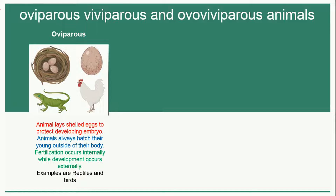Hey learners, I'm your teacher Dr. Onam, and today we are going to study about oviparous, viviparous, and ovo-viviparous animals. First of all, oviparous — oviparous animals lay shelled eggs to protect the developing embryo.